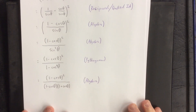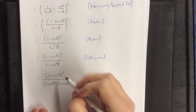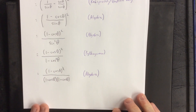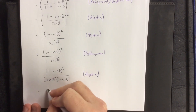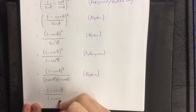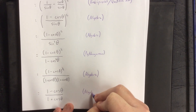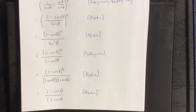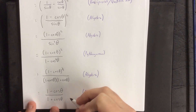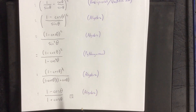The numerator has a factor of one minus cosine of theta and the denominator also has one minus cosine of theta, so we can cancel one factor from the top with one from the bottom, leaving us with one minus cosine of theta over one plus cosine of theta — a step of algebra. The box with two slashes through it means this completes the proof.